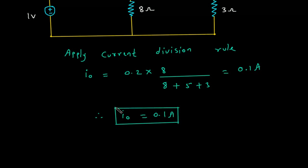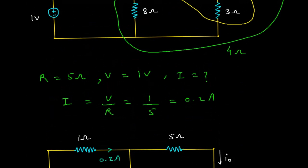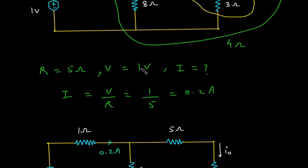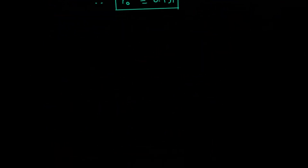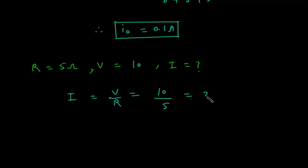Next, what we have to find? We have to find what does this current become when the input voltage is raised to 10V. So resistance will be constant. This resistance will be 5 Ohm, but the value of this voltage is changed, so this will be 10V. Now I is equal to V by R. So V is 10 and R is 5, so this will be 2 Ampere.